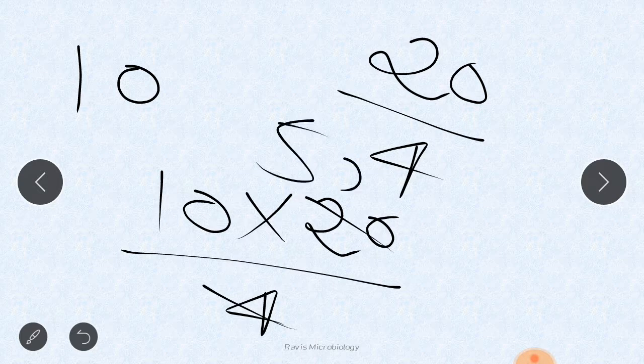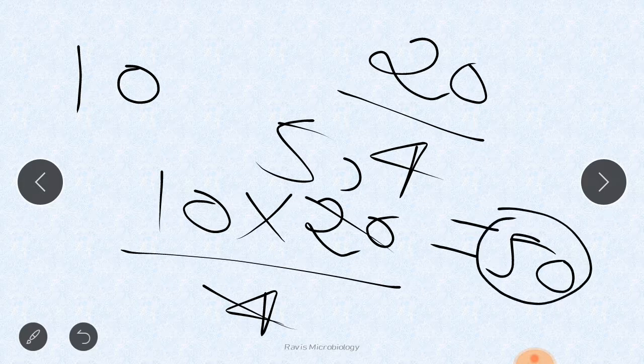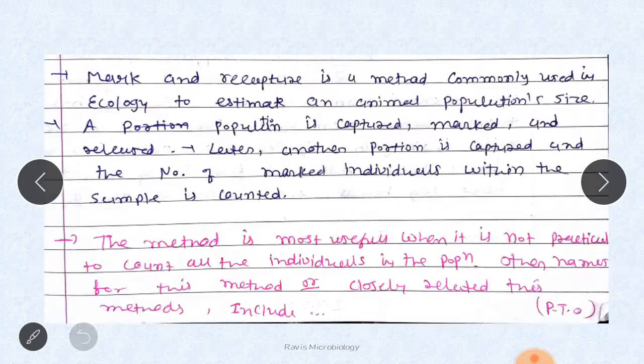What will be the formula? 10 times 20 divided by 4. So 50 rats are present in your area.